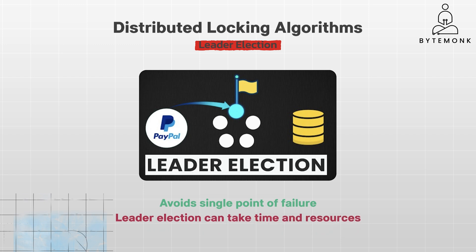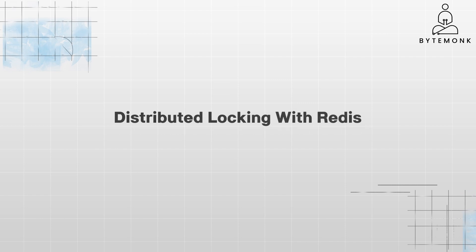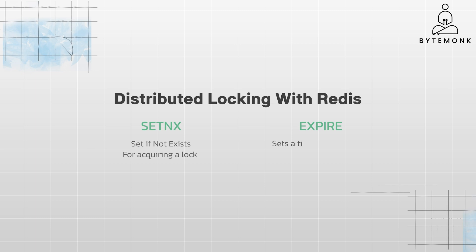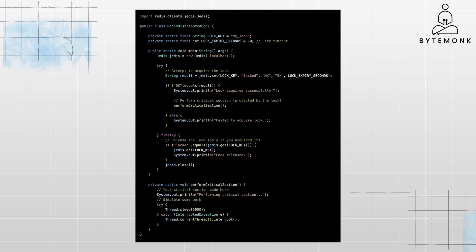You can check out my video on leader election algorithm where I explain this algorithm in detail with practical examples, both pros and cons. Now, Redis is a popular choice for implementing distributed locks due to its speed, simplicity, and built-in commands like SET NX, which atomically sets a key only if it doesn't exist, and EXPIRE, which sets a timeout for the lock to prevent it from being held indefinitely. Let's check out a simple Java example that demonstrates distributed locking using Redis, leveraging SET NX, EXPIRE, and DEL commands.